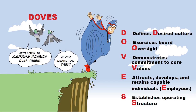The D defines the desired culture. The O is oversight — the board has to exercise that oversight. The V in DOVES demonstrates commitment to core values. The E is employees — we want to attract, develop, and retain capable individuals. And then lastly, the S is structure — establish that operating structure.